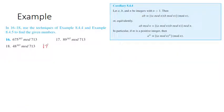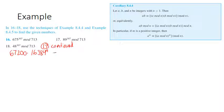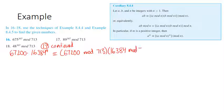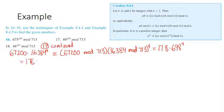Picking up — this is number 17 continued. What we had on the last slide was 67,200 times 16,384 to the 9. Doing mod 713 to both: I'm using Wolfram Alpha to get those modulus values. This gives 178 times 698 to the 9. Again an odd exponent: I'll break off one copy of 698, leaving (698 squared) to the 4.